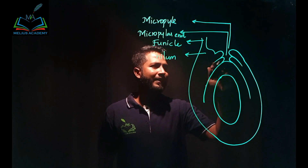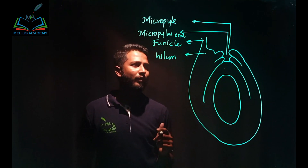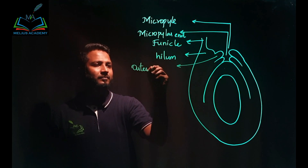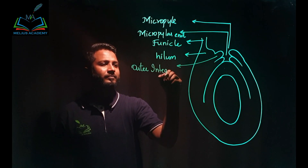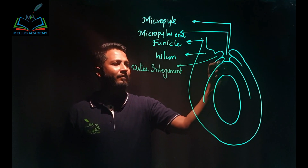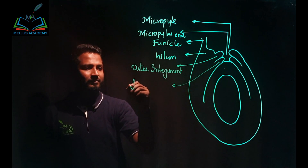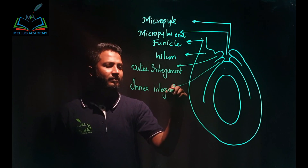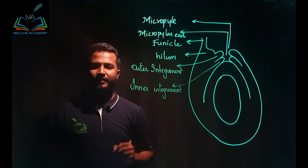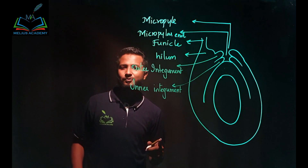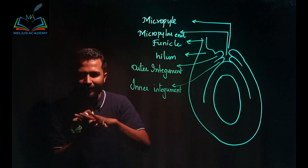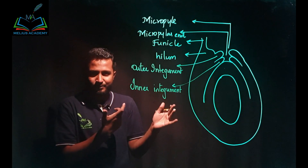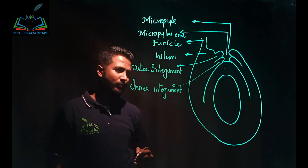The wave-like structures and hairs we drew are known as integuments. This is the outer integument, followed by the inner integument. Integuments are the parts which will develop into seed coat — the outer husk layer on a seed. The husk part is basically the integuments.